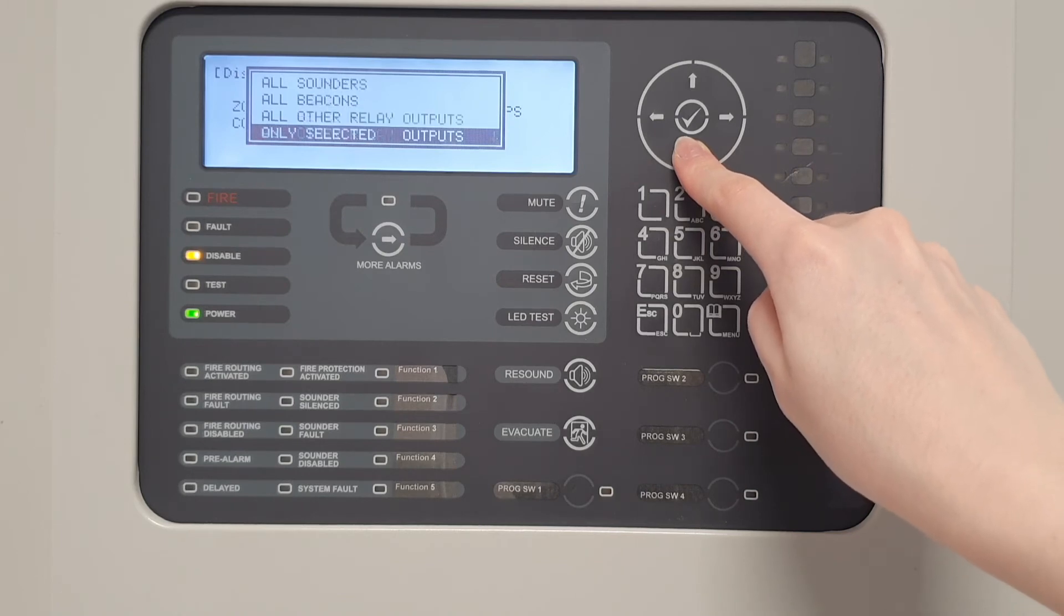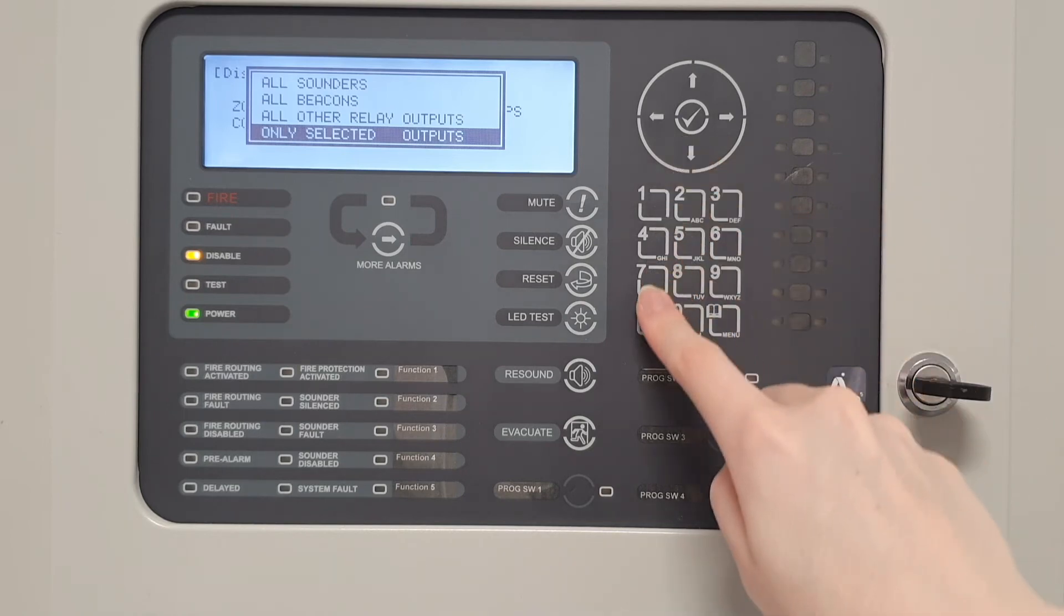If only selected outputs is selected, all outputs within a zone or a specific output can be disabled in the same way that inputs are disabled. Pressing escape will take the panel out of this menu.